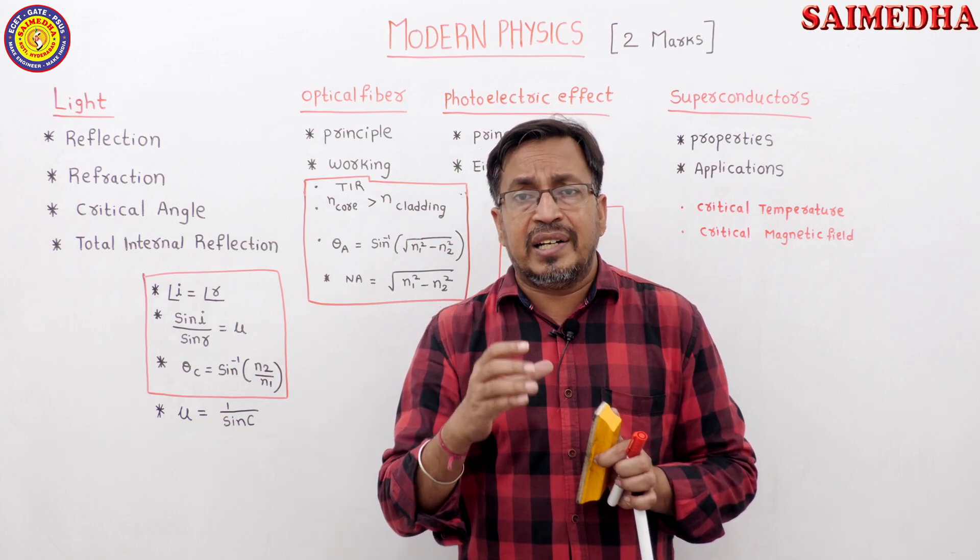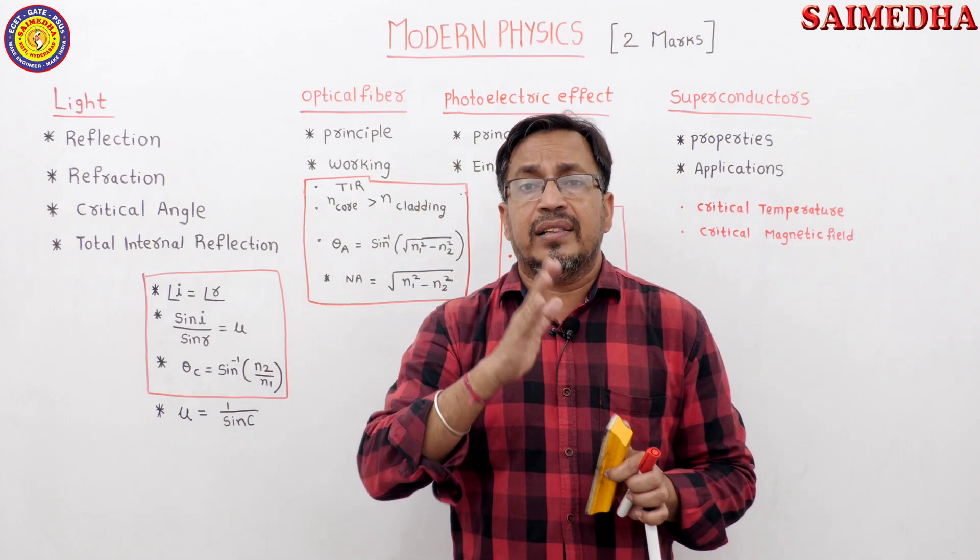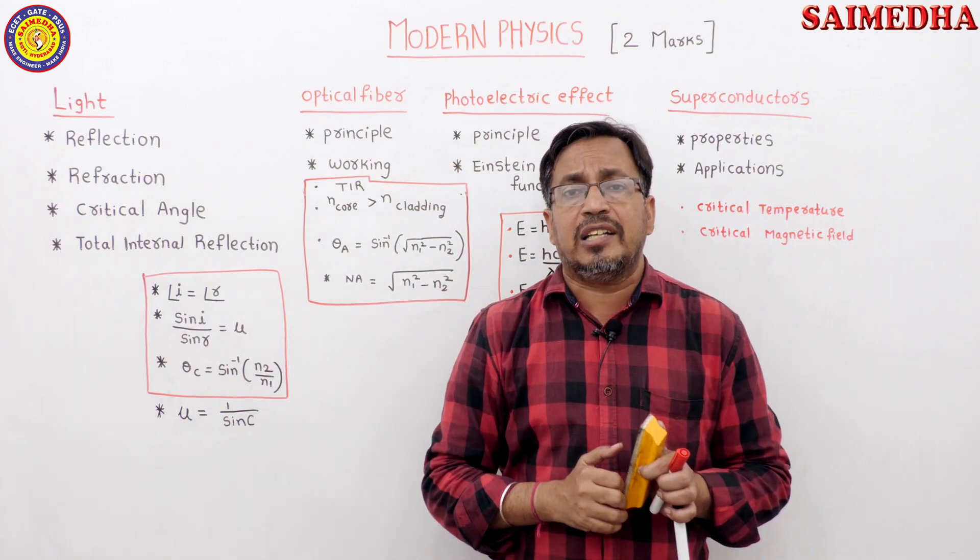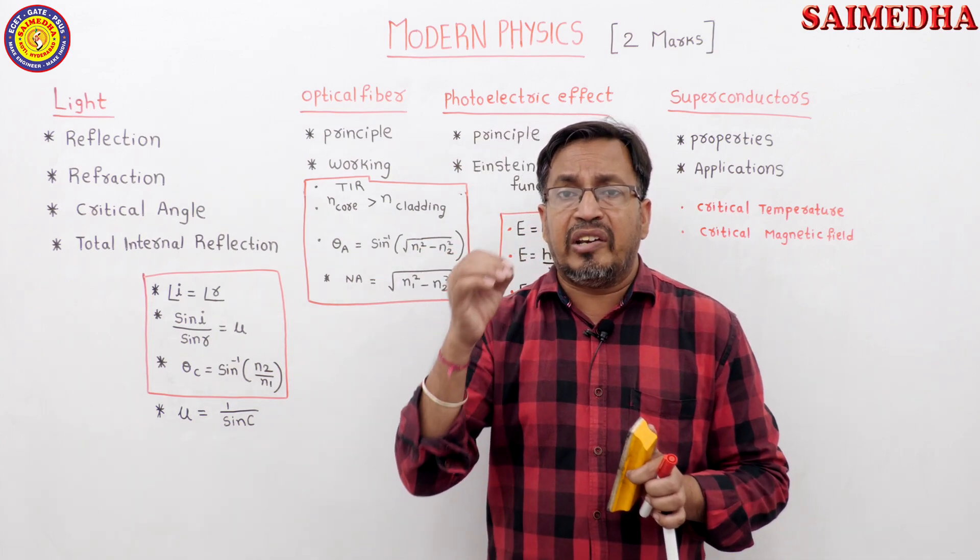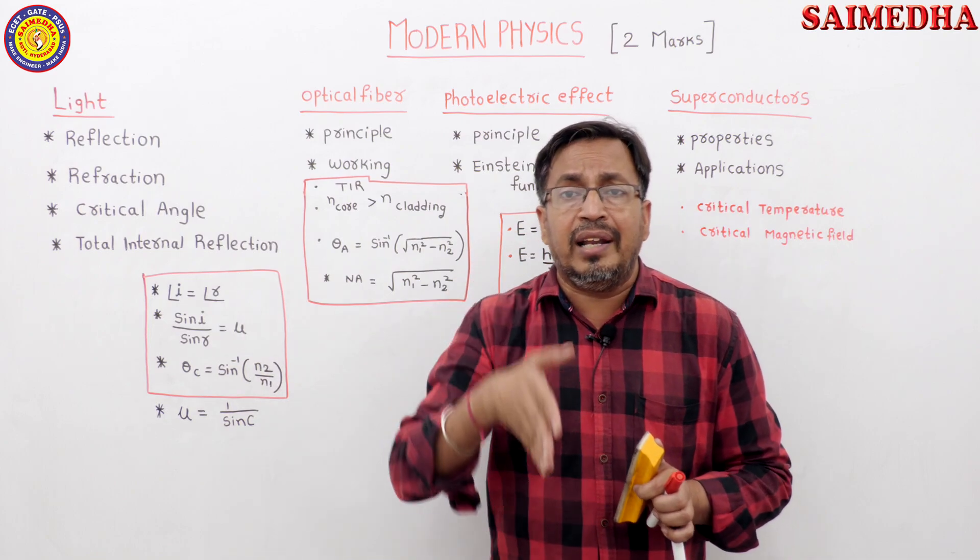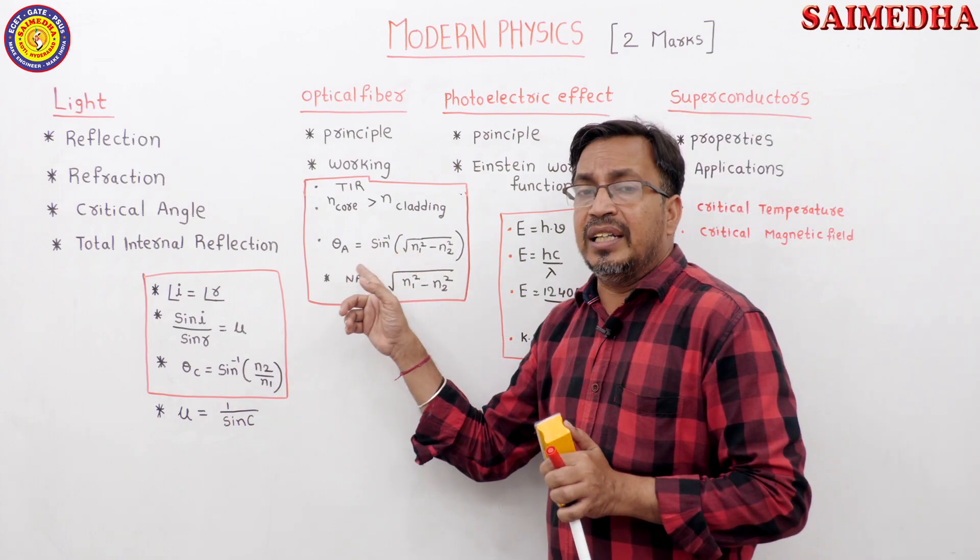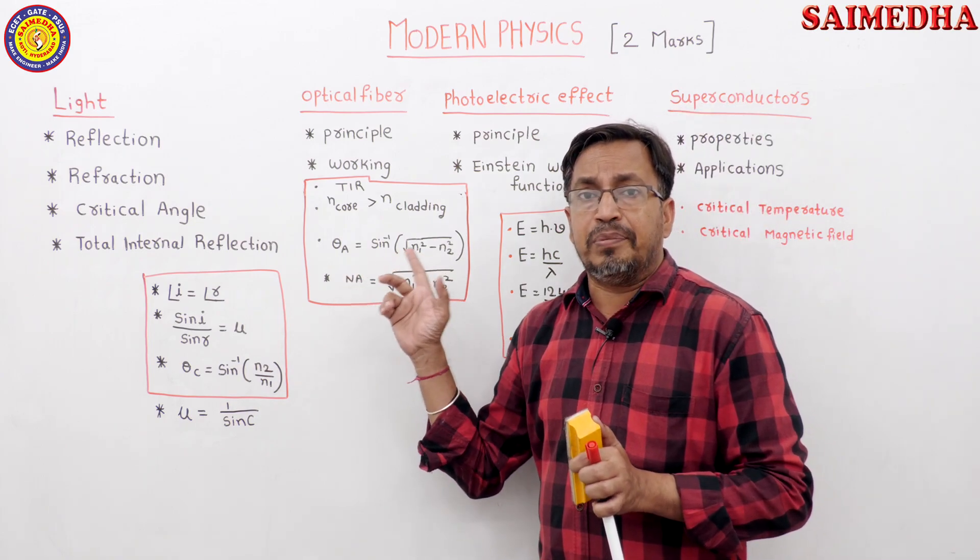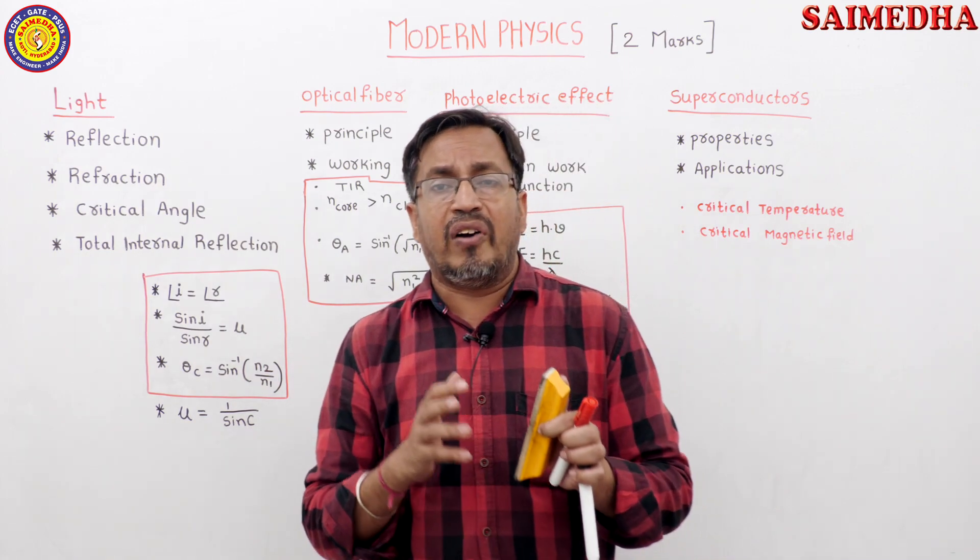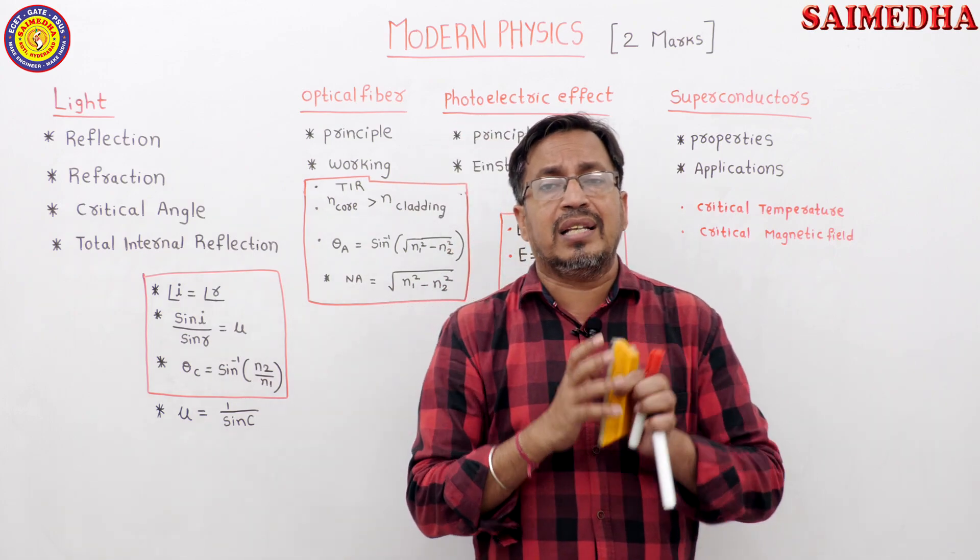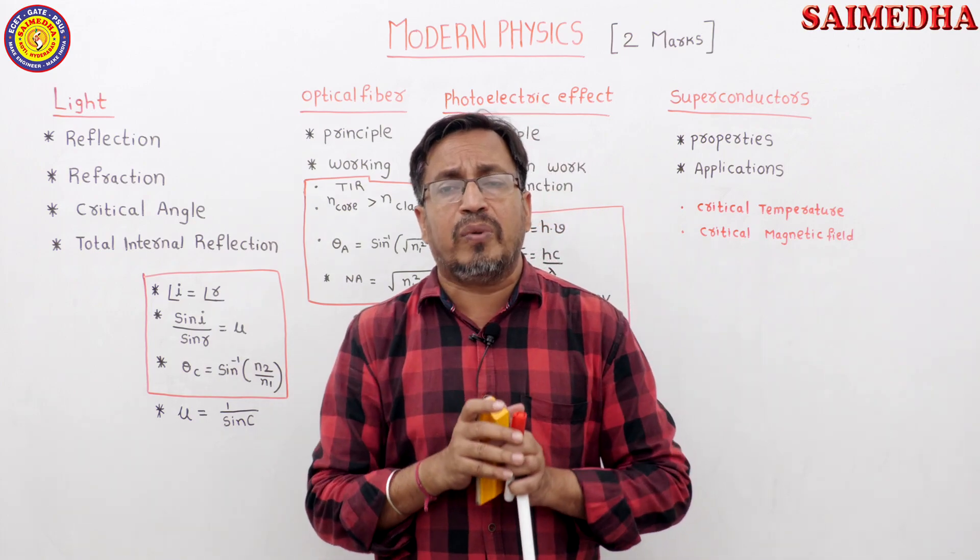What is acceptance angle? An angle of incidence at which the refracted ray is totally reflected, that angle is known as acceptance angle. Acceptance angle theta A equals to sine inverse of under root of N1 square minus N2 square, and numerical aperture.